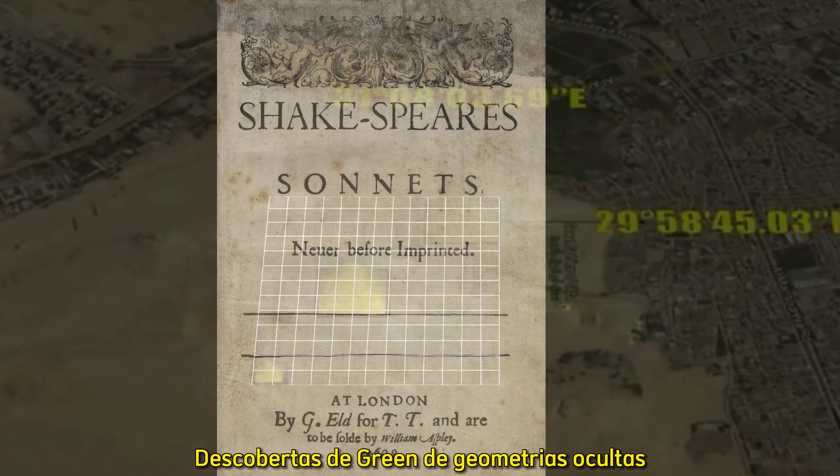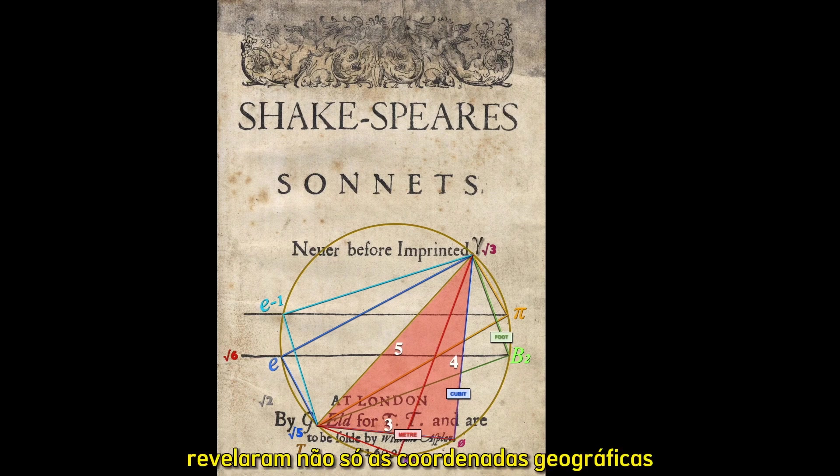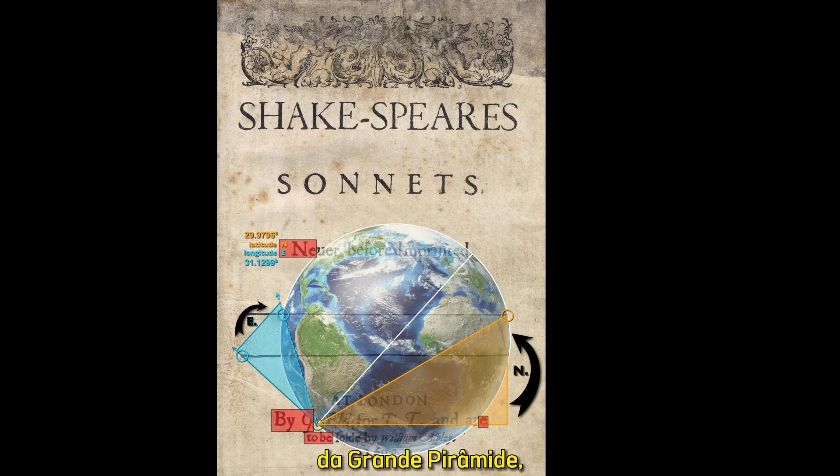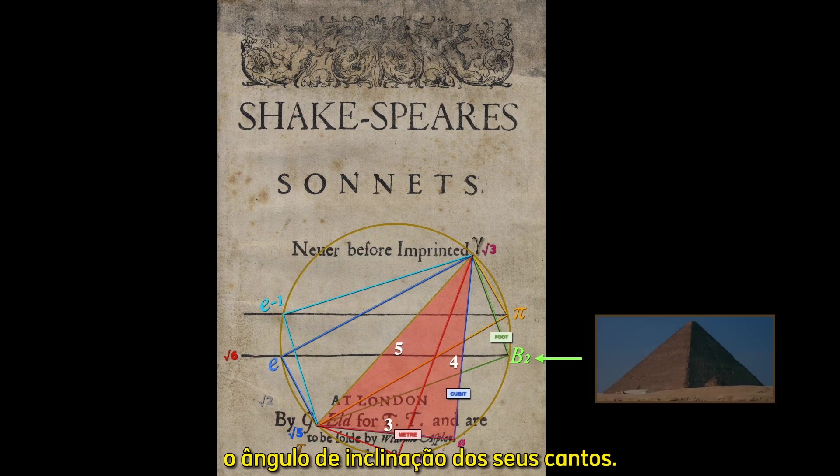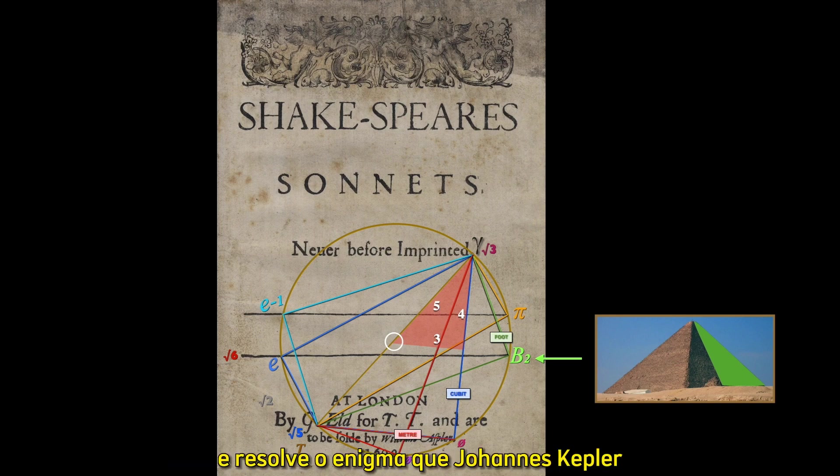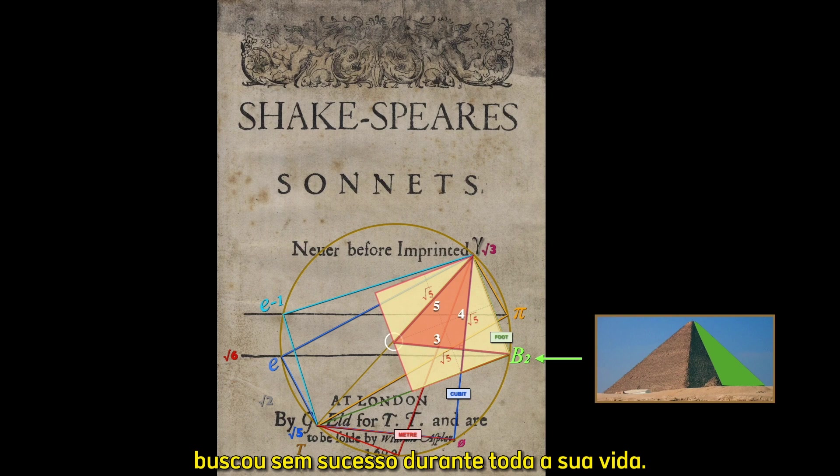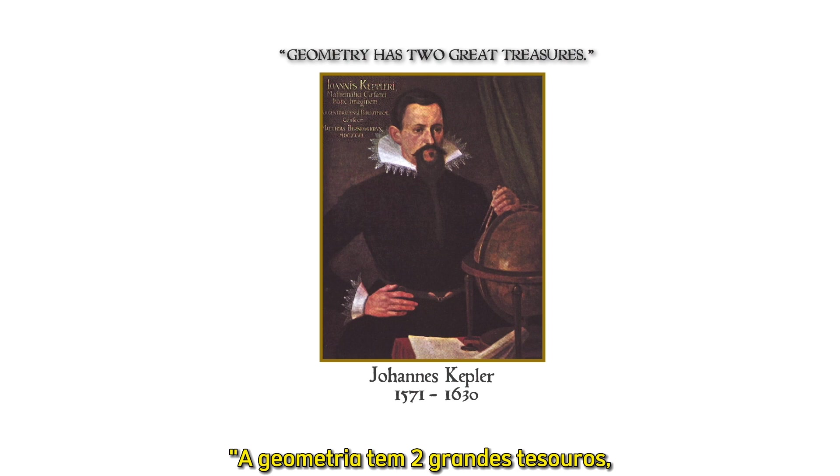Green's discoveries of hidden geometries on the cover of Shakespeare's sonnets reveal not only the geographic coordinates of the Great Pyramid, but the math constant that predicts its corner-slope angle. It's positioned in such a way as to align with the sonnet circle's center and solves the conundrum that Johannes Kepler had wrestled with unsuccessfully his whole life. He had famously stated, geometry has two great treasures.